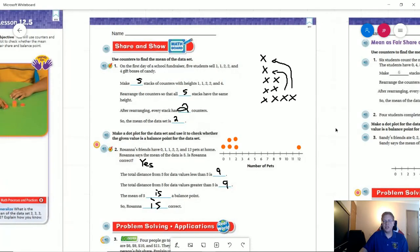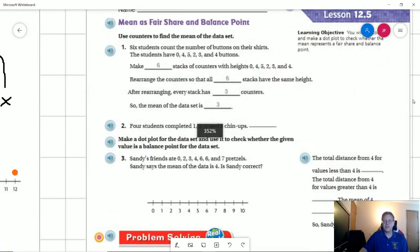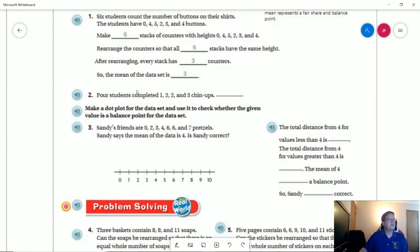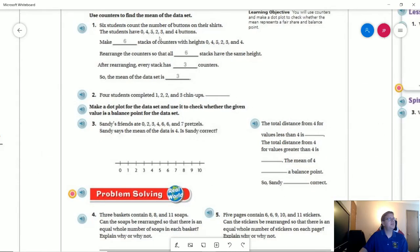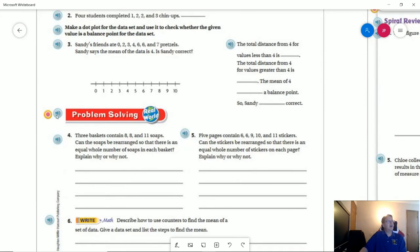For the homework, we are looking at the following problem. Number one was already filled in for us, so that leaves us with number two. For number two, they want us to figure out the means. We're going to have a group of one, a group of two, another group of two, and a group of three. For number four, we want to figure out if we can arrange three baskets that have 8, 8, and 11 so that there's an equal number in each basket, and then to say why or why not.